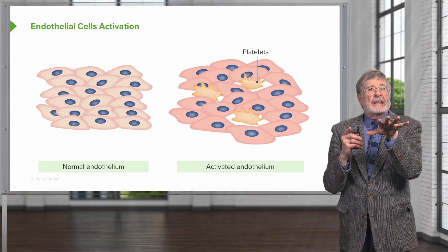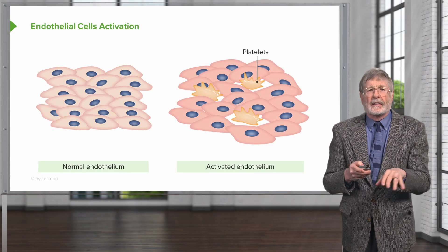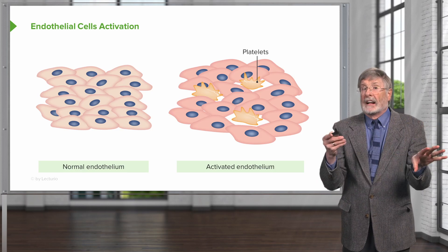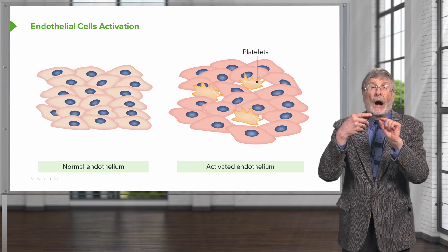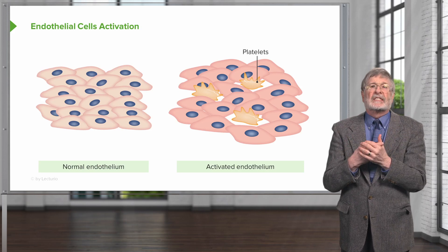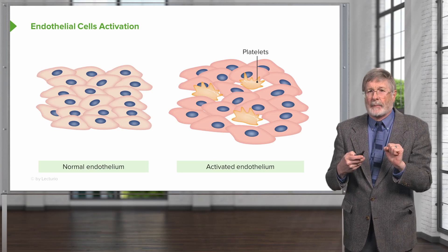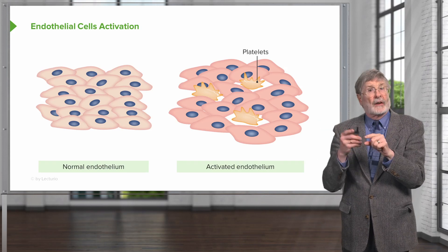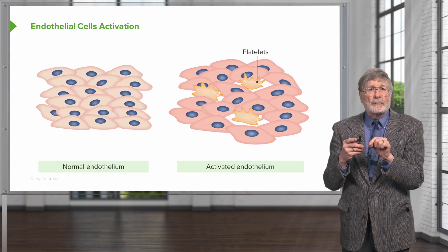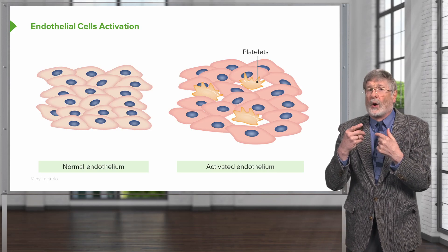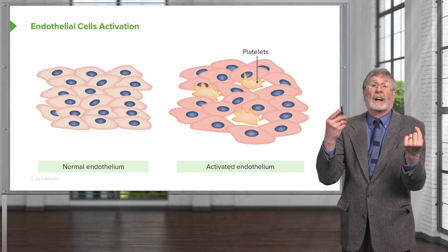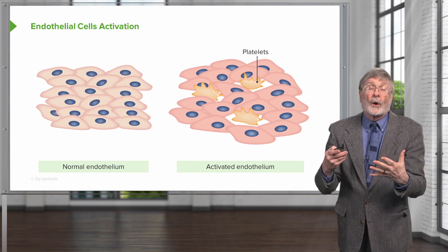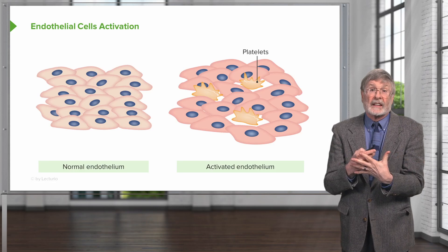Endothelial cells — in a normal endothelium, we have a monolayer that sits on top of the basement membrane, and they're normally not activated. They are going to be maintaining blood in a liquid state. When they become damaged — and that damage is not necessarily just ripping them off, as you see there on the right-hand side — but could also be inflammation or just an activation because of additional biomarkers that are released.